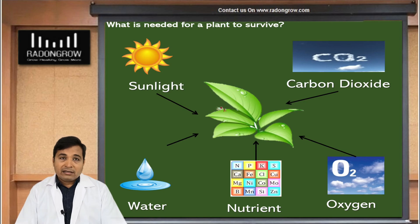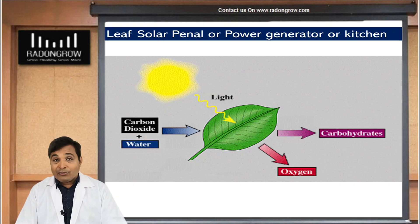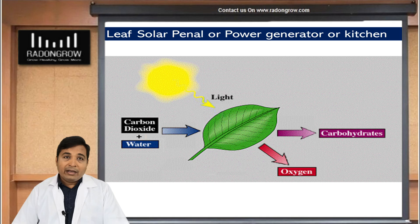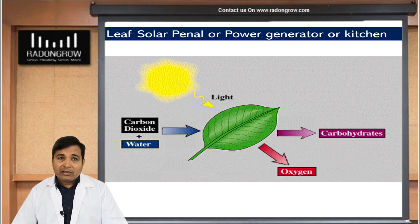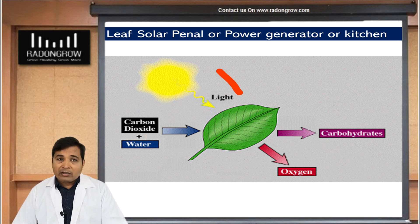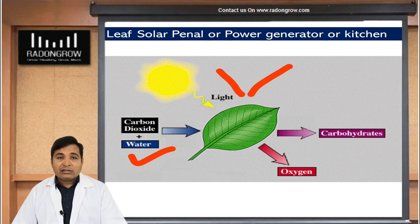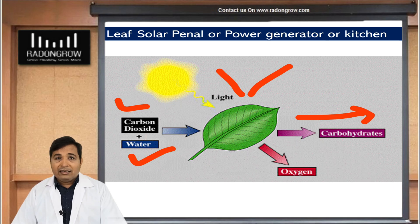We will discuss how a plant works. The leaf is the plant's kitchen, or you can say the leaf is a solar panel, where it consumes sunlight. In the presence of sunlight, the leaf uses water and carbon dioxide, and the plant produces carbohydrates and sugar, releasing oxygen as a byproduct.